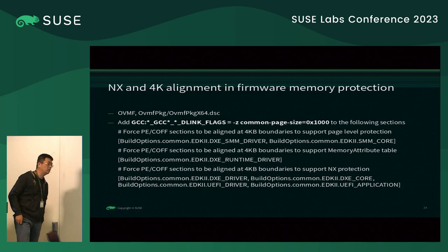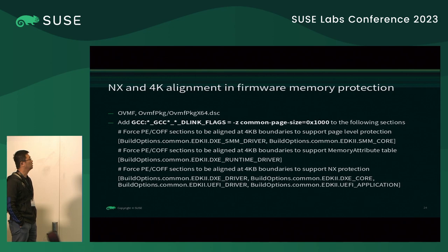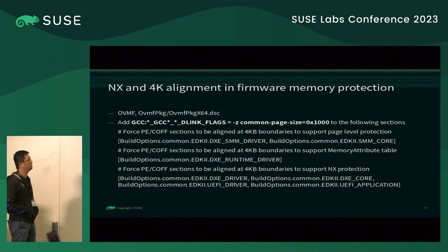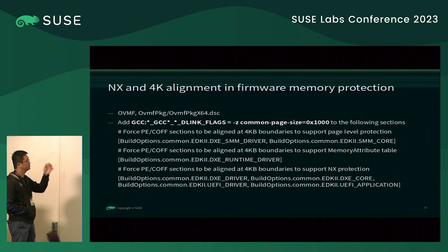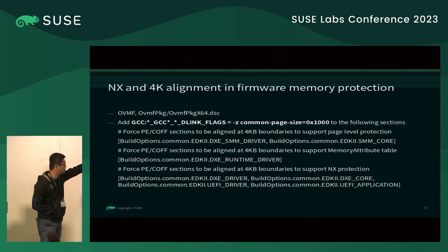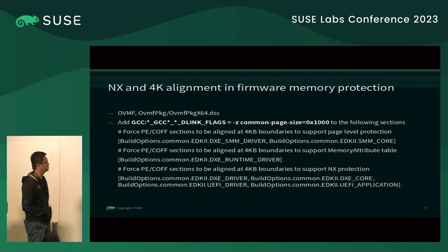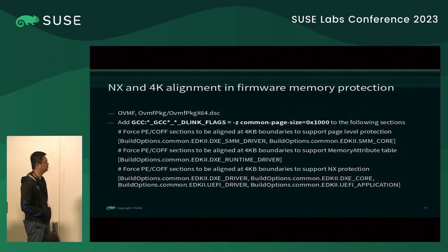To verify that our SHIM has the NX flag and correct memory partitioning, we can modify OVMF to check it. OVMF is a sub-project of EDK2 — it's a firmware that can run in QEMU/KVM. We add the GCC option '-z common-page-size' to 4K. We need to set this in three places in the OVMF description for different stages: SMM for page-table partitioning, runtime driver for supported memory attribute tables, and DXE for NX partitioning.